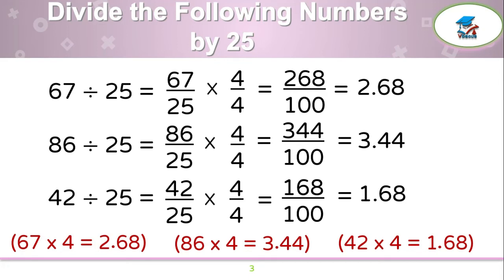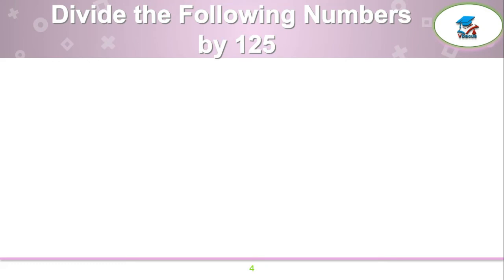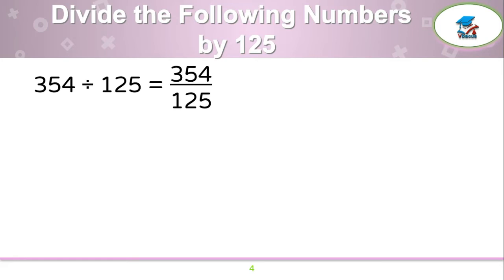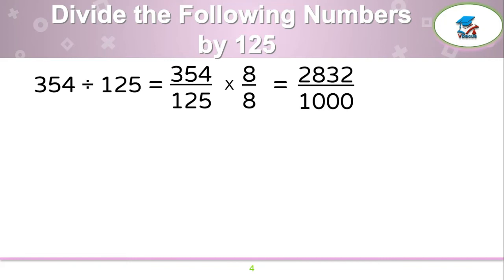Isn't it amazing? Now let us divide the following numbers by 125. First example: 354 by 125. Write 354 over 125, which should be multiplied by 8 over 8. 354 times 8 is 2,832, and 125 times 8 is 1,000.